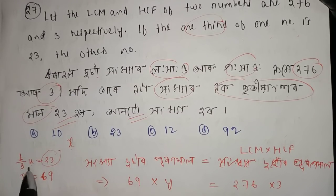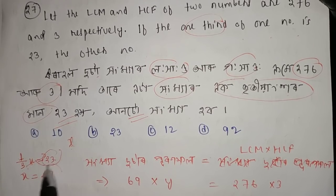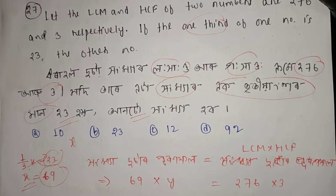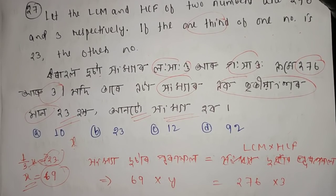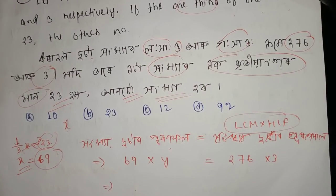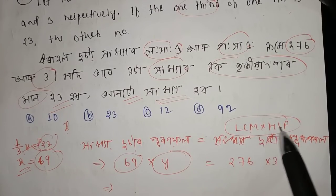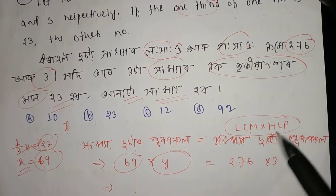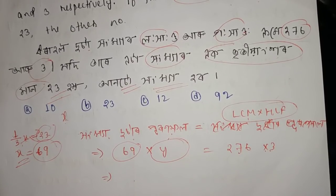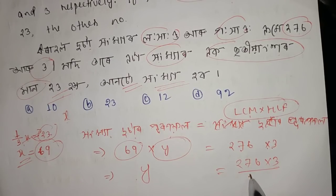To find the other number, cross multiply: one-third of x is 23, so x = 23 × 3 = 69. Then LCM × HCF = 276 × 3. The first number is 69. Dividing: 276 × 3 ÷ 69 = 12. So the other number is 12. Clearly confirmed: 3 goes into 69 as 23.